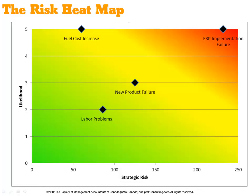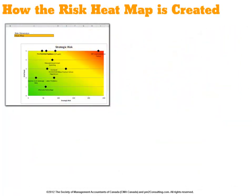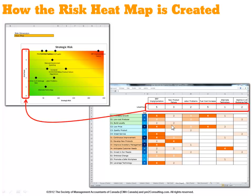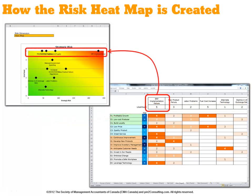Let's remind ourselves of how this chart is created. In this spreadsheet, you identified each of the risk elements across the top of the spreadsheet, and down the left axis, the strategic objectives and their priorities for this period. The likelihood is charted up the left axis. If we take a look at the first risk element in this chart, ERP implementation, you'll see that it has a likelihood of 5, and therefore will be charted somewhere across the top of the chart.